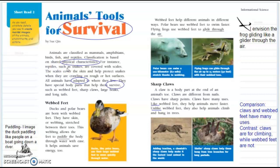So let's begin. Please read along with me. Animals' Tools for Survival: Animals are classified as mammals, amphibians, birds, fish, and reptiles. Classification is based on shared physical characteristics. For instance, reptiles such as snakes are covered with scales. The scales cover the skin and help protect snakes when they are crawling on rough or hot surfaces. All animals have adapted to where they live.